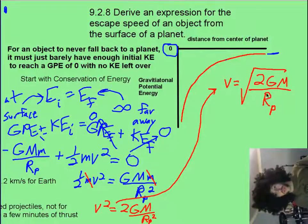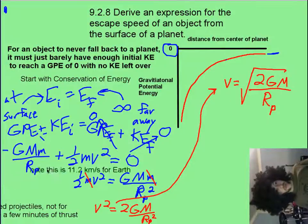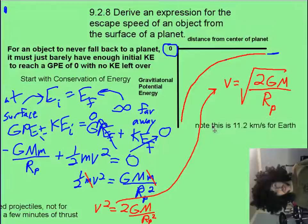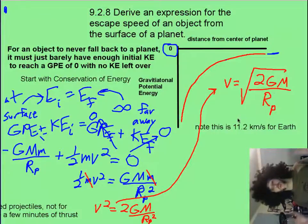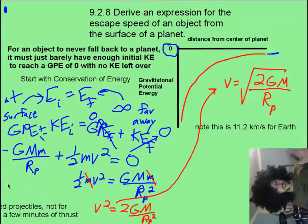and I went ahead and solved for velocity. And you end up with this not-too-difficult equation, where this is big G, mass of your planet, radius of your planet. And keep in mind that for Earth, this is 11.2 kilometers per second. And also keep in mind,